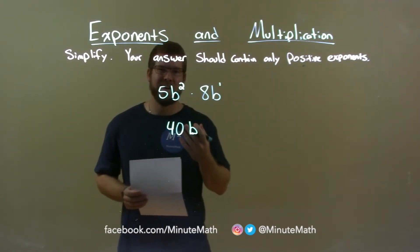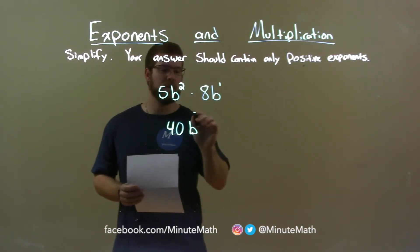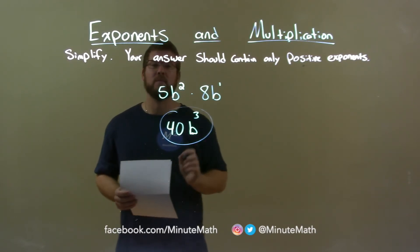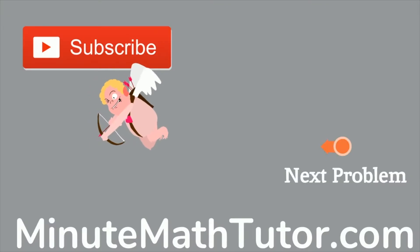And now we add the exponents. 2 plus 1 is 3, and so my final answer is 40 times b cubed. Minute Math!